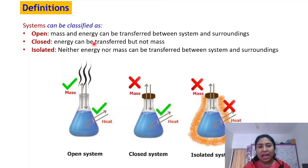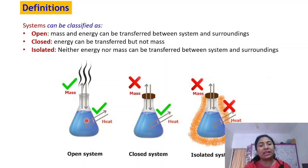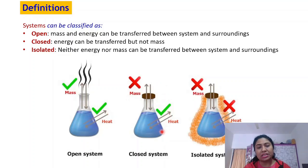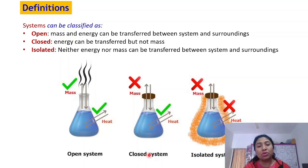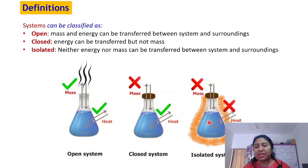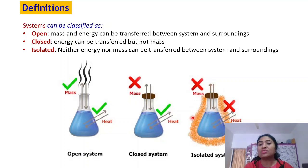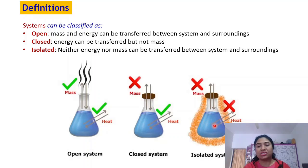Now we have categorized systems into three parts: open system, closed system, and isolated system. An open system is one in which we can exchange both mass and heat with the surrounding. In a closed system, mass cannot be exchanged, but heat can be exchanged — it is closed for mass but not for heat exchange. In an isolated system, neither heat nor mass is exchanged. The system is totally isolated from the surroundings — both mass and heat cannot be exchanged.